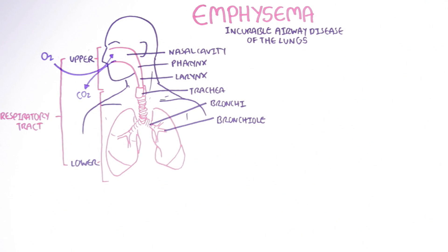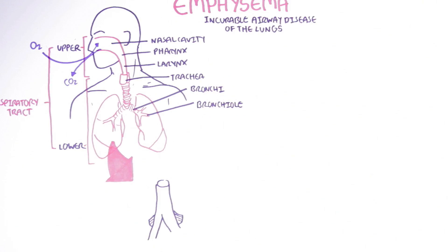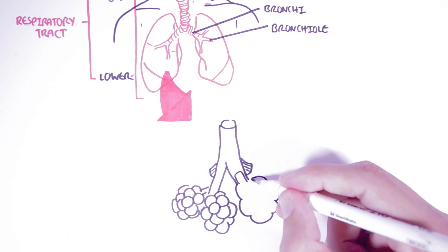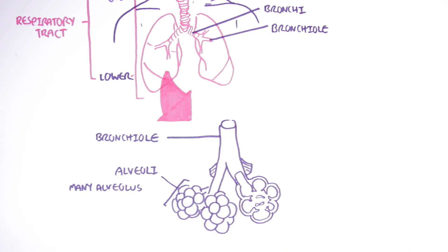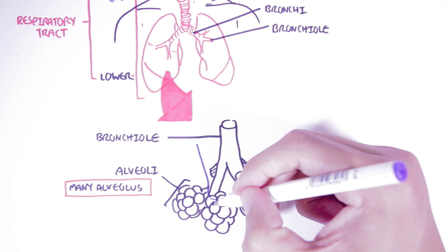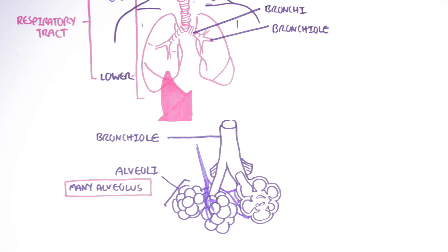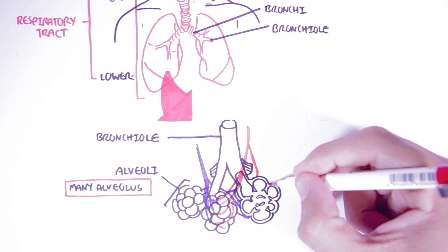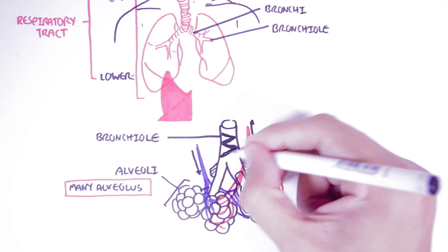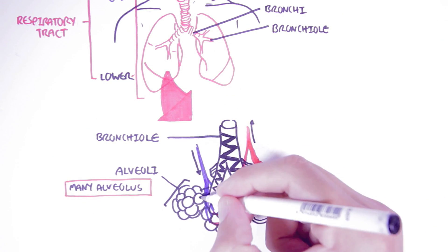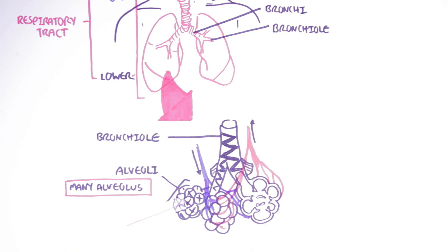Let's zoom into these normal lungs and look at a normal alveolus. The alveoli are found in bundles, with the bronchioles and terminal bronchioles joining to the alveoli. Alveoli is plural — it is composed of many alveolus. There is a rich blood supply around the alveoli because this is where gas exchange takes place. The terminal bronchiole and each alveolus is wrapped around by elastic fibers.